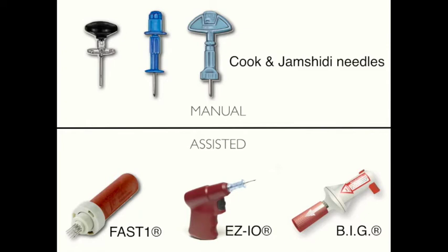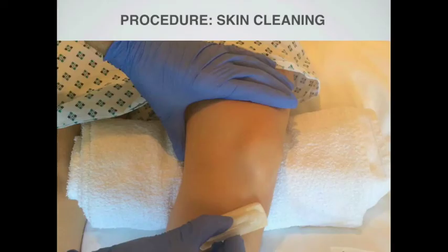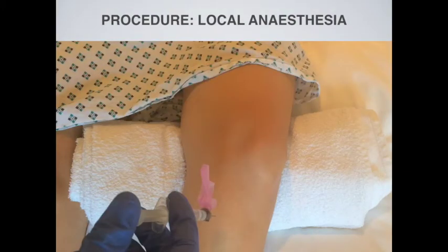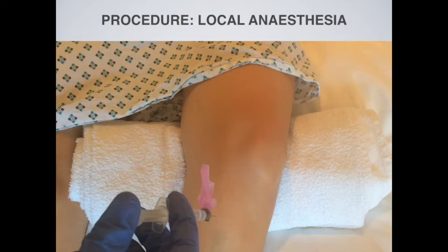Before focusing on assisted devices, we will go through the standard procedure of gaining IO access with a manual IO needle — the preparation and procedure being the same for assisted devices, apart from the insertion itself. After identifying the insertion site, clean the skin with an antiseptic agent like chlorhexidine or iodine. If the patient is conscious, after explaining the procedure, consider using local anesthesia. Patients may experience somatic pain as the needle penetrates tissue and bone — usually at the level of pain associated with IV cannulation for assisted devices, though manual needle insertion can be more severe. Local anesthesia can be achieved with lidocaine, applied generously all the way down to the periosteum.